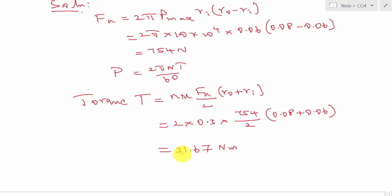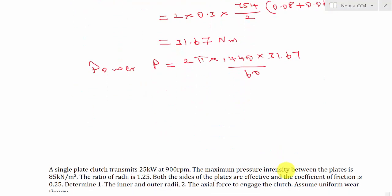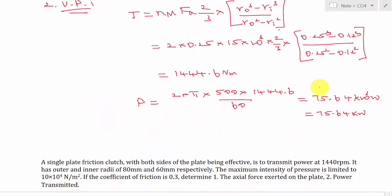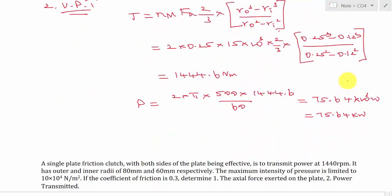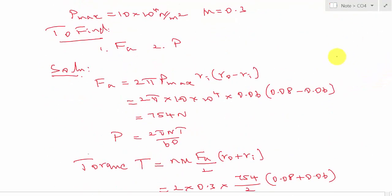Solving gives T = 31.67 N·m. Then power P = 2π × 1440 × 31.67 / 60 = 4643 W, or 4.643 kW. In the previous problem FA was directly given but here we calculated it first using the maximum pressure intensity before finding the power.